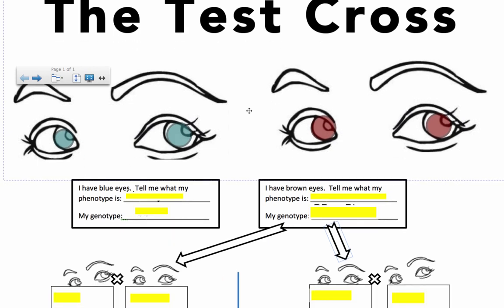So here we have two characters — one is supposed to be male, one's female. We don't really care which is which because it's not a sex-linked trait. This character has blue eyes, so their phenotype is obviously blue eyes. The other has brown eyes, so that phenotype is obviously brown eyes.